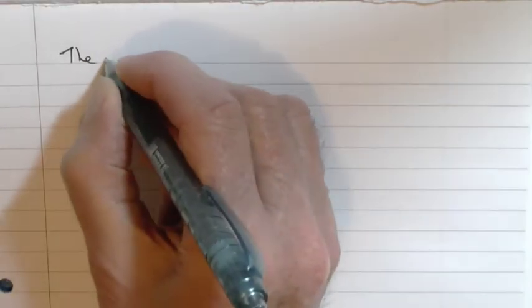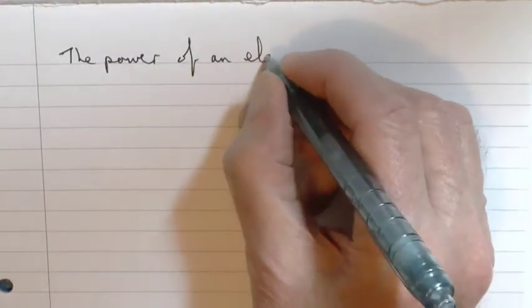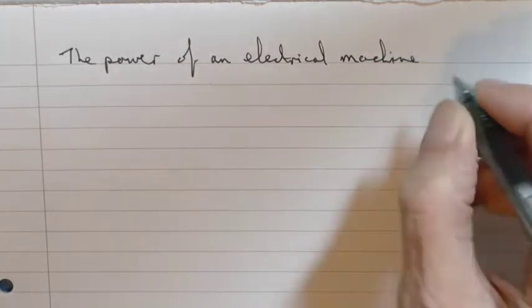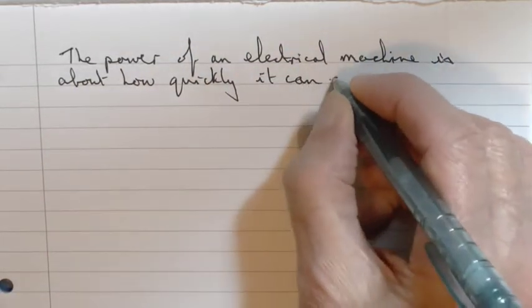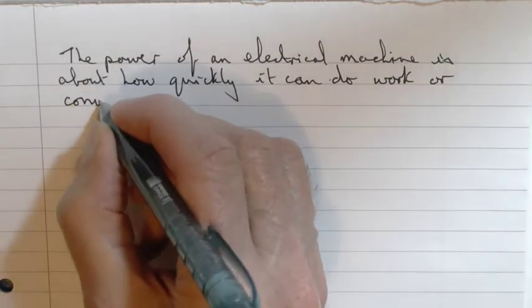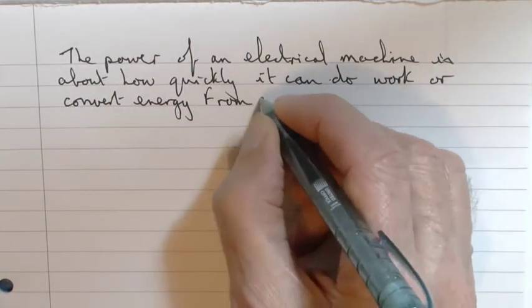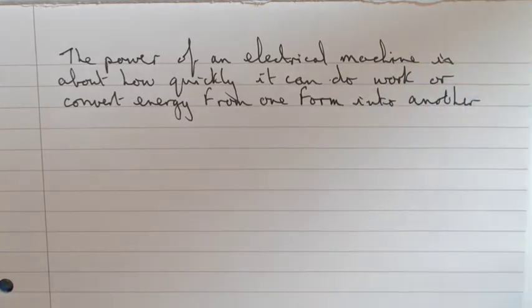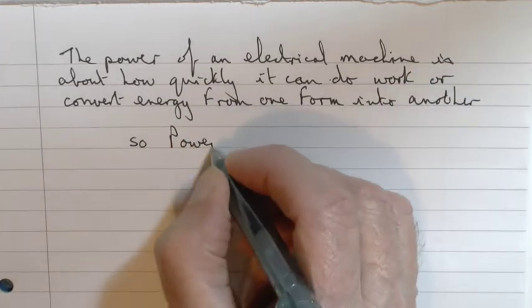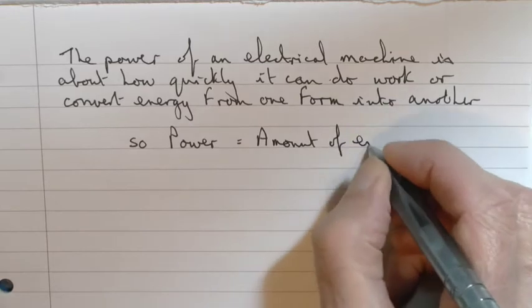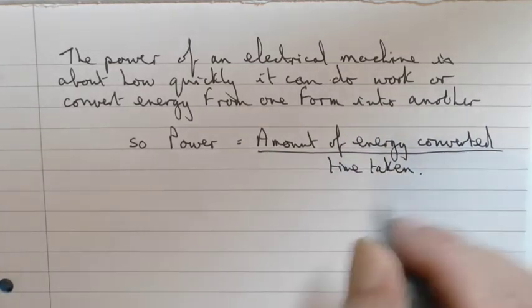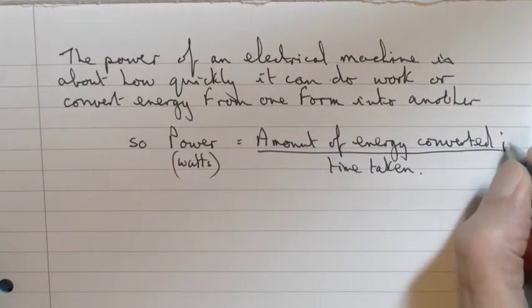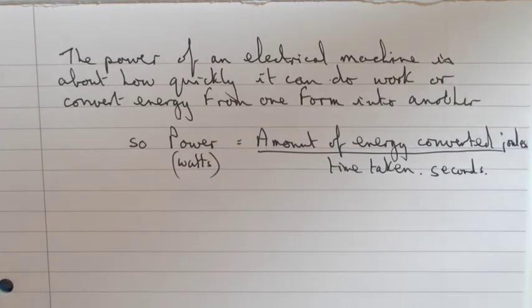So let us look next at the power of this system. The power of an electrical machine, indeed any machine, is about how quickly it can do work, how quickly it can convert energy from one form into another. In the case of this resistor, from electrical energy to heat. That definition gives us the equation that the amount of energy converted divided by the time taken is power—that is the rate of doing work. So power is energy divided by time.